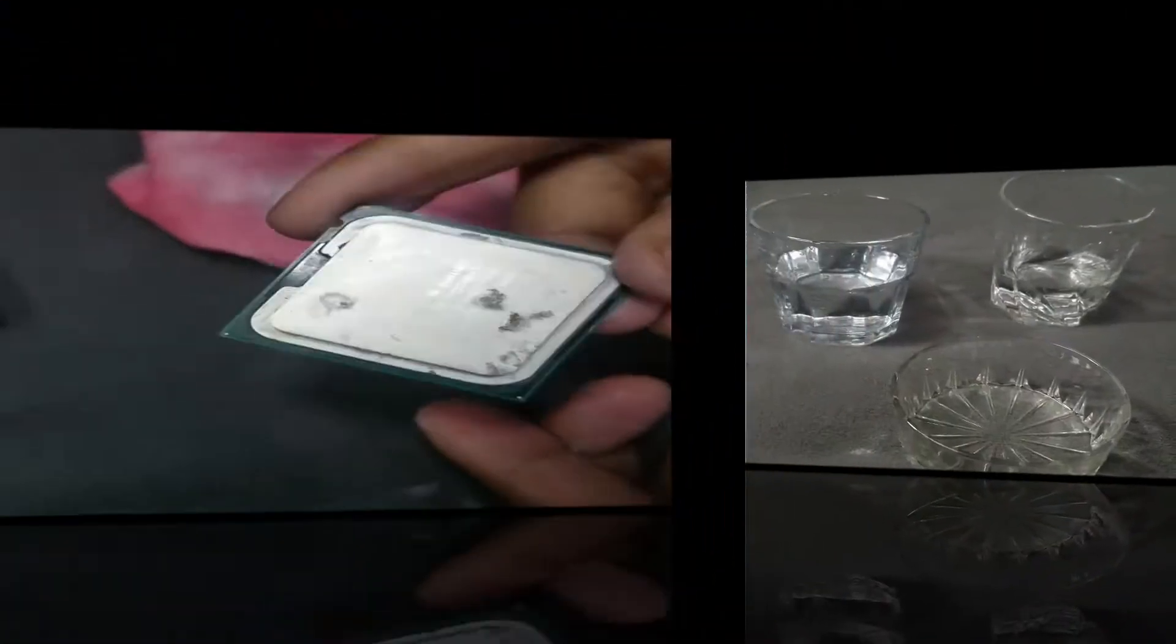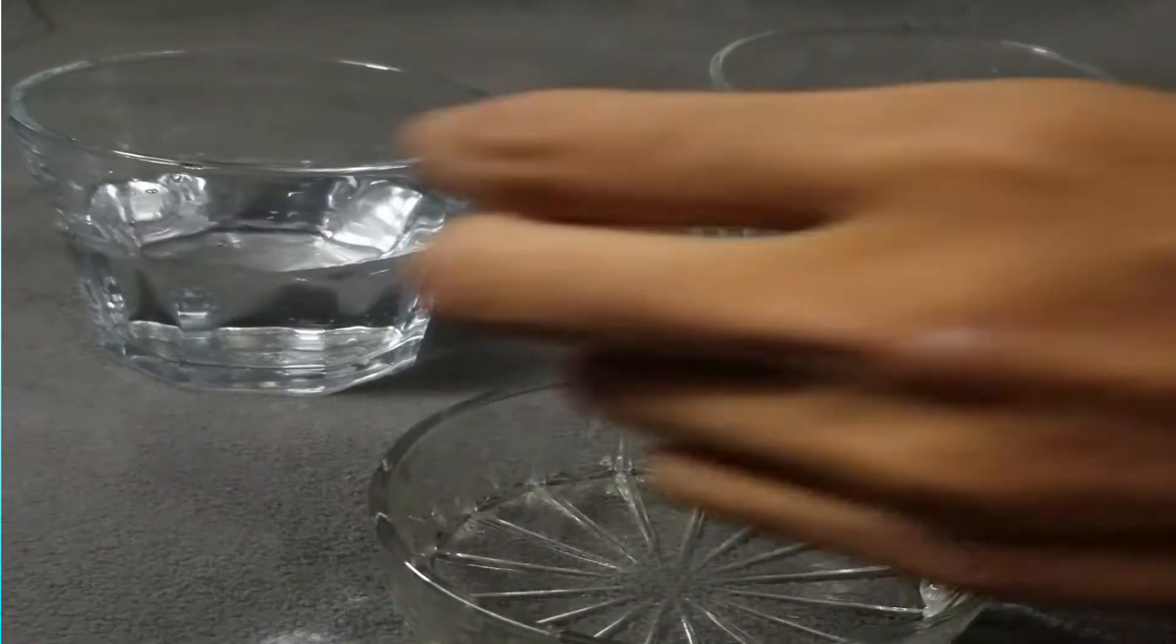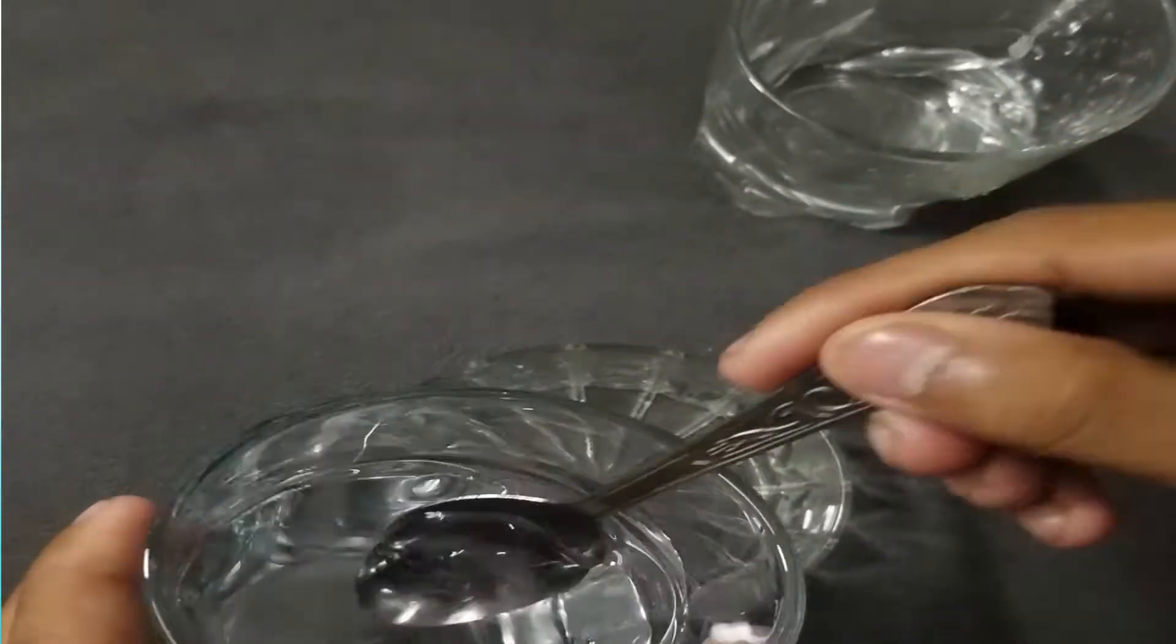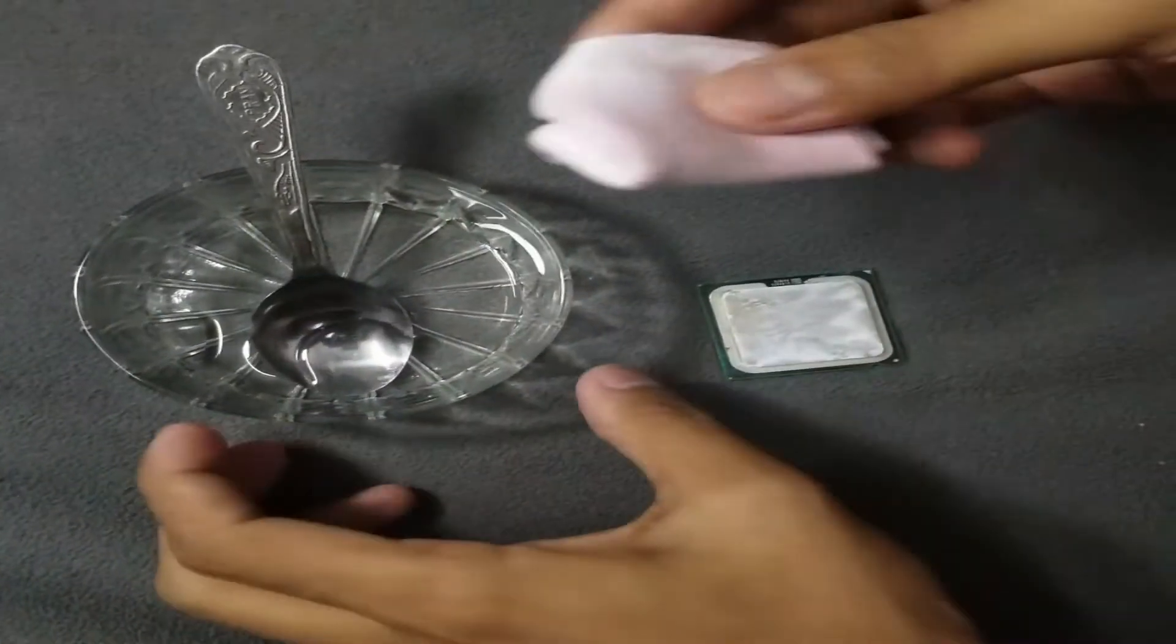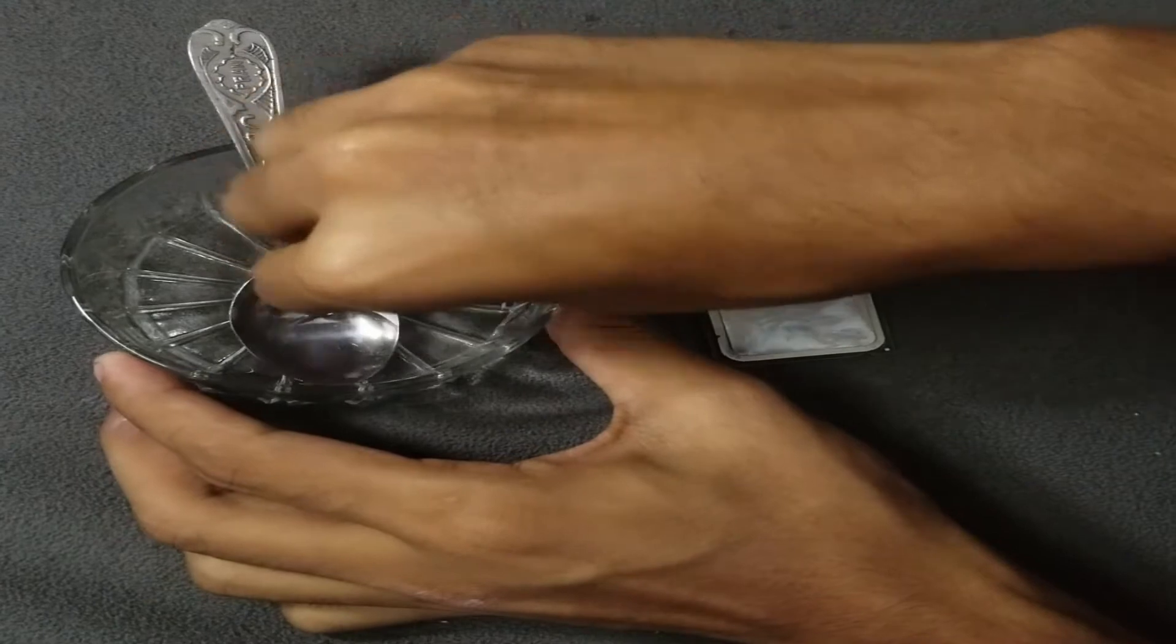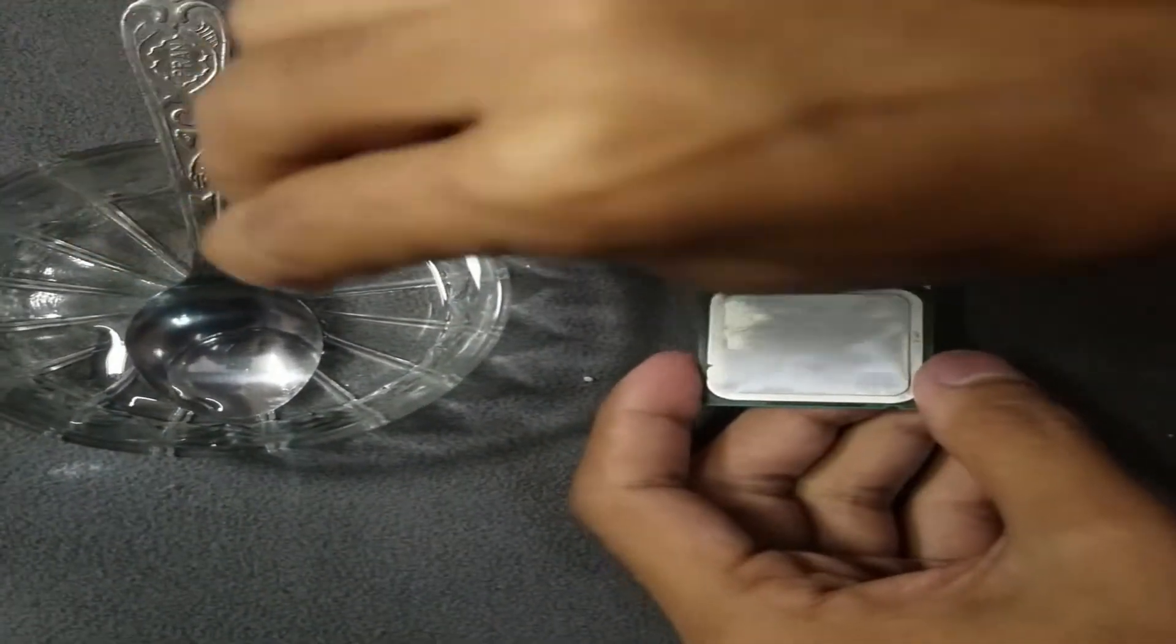Now check out our second method. Here you need vinegar and distilled water. Take the desired amount of vinegar and distilled water with 50 to 50 proportions and mix them. Dip the cloth inside the solution or put a little amount of the solution on the cloth using a spray bottle.